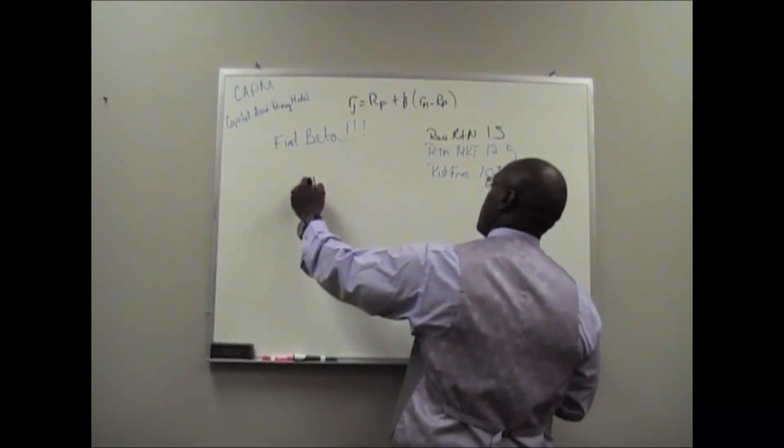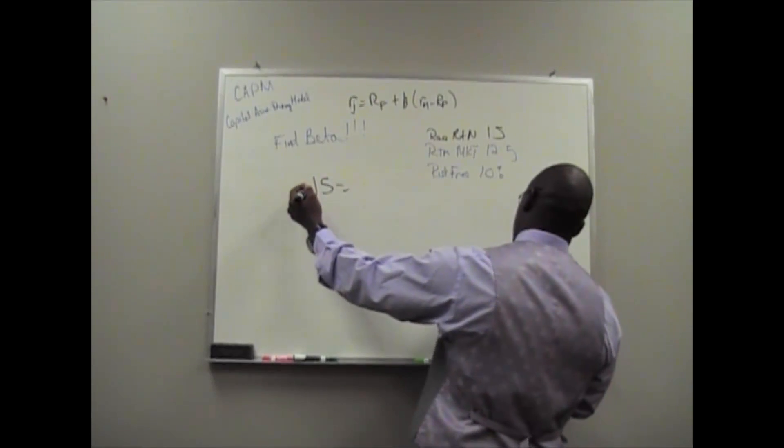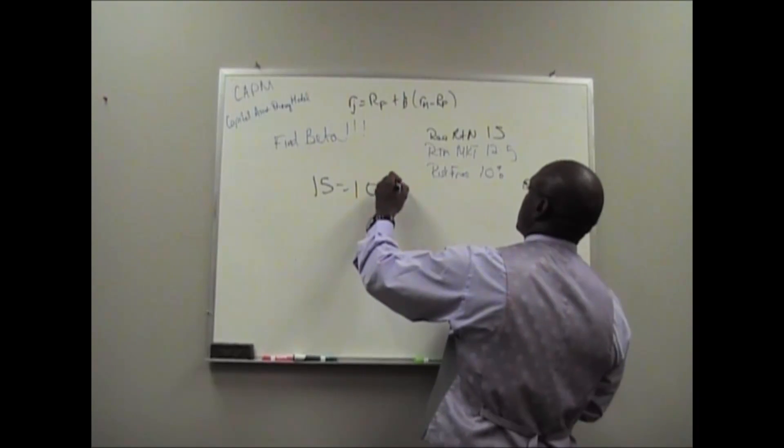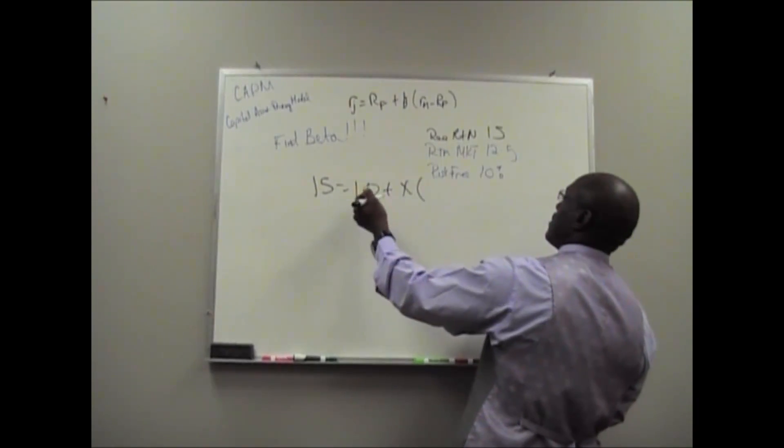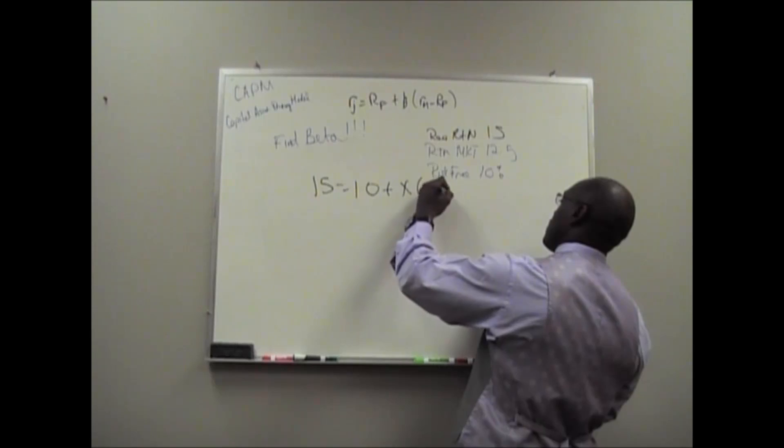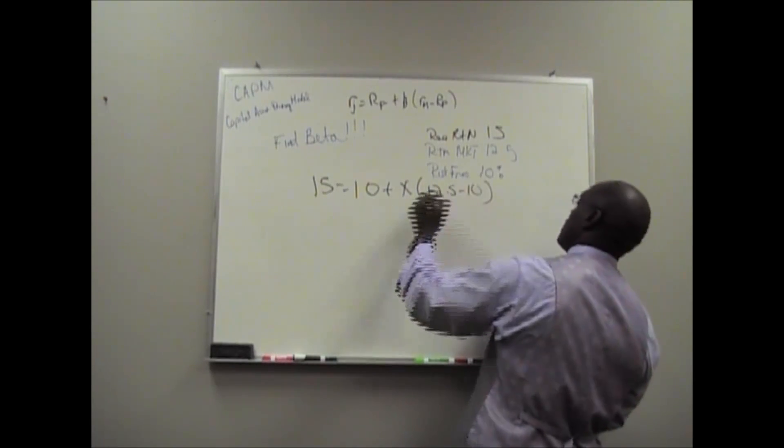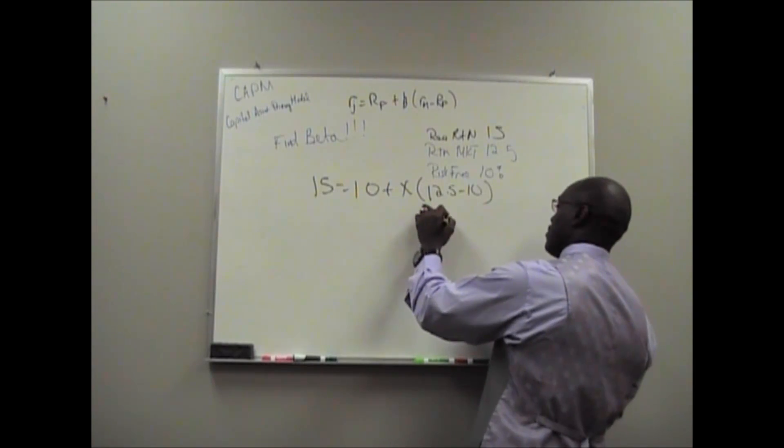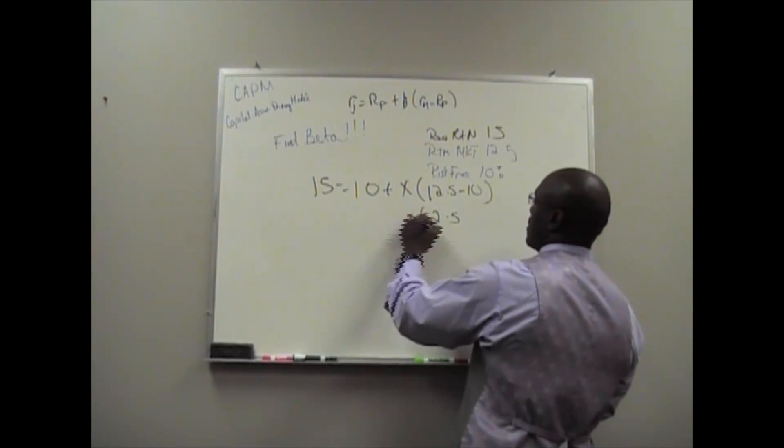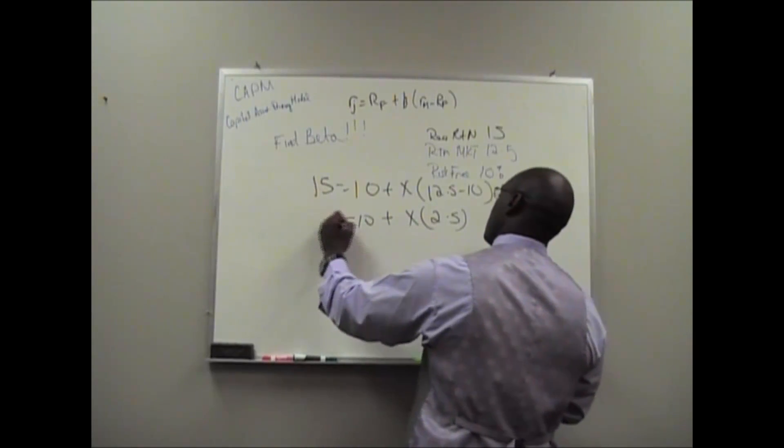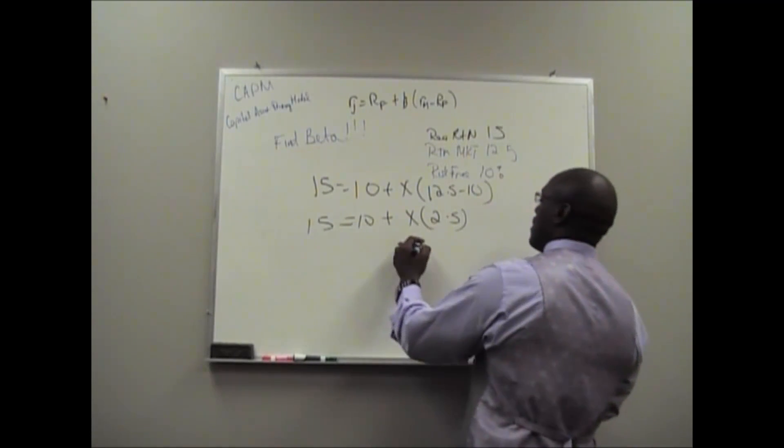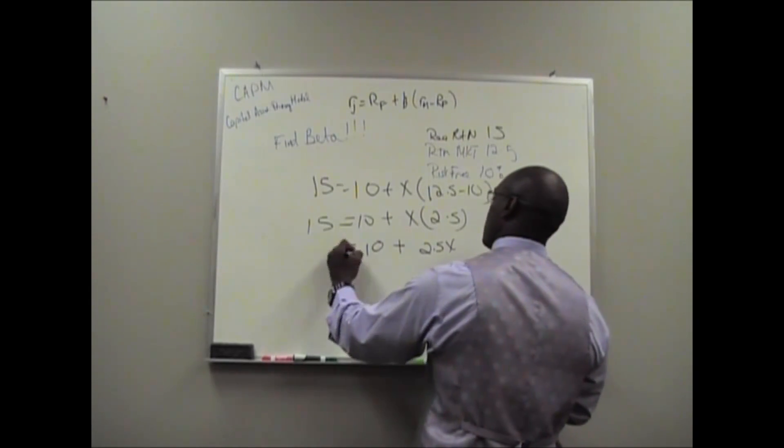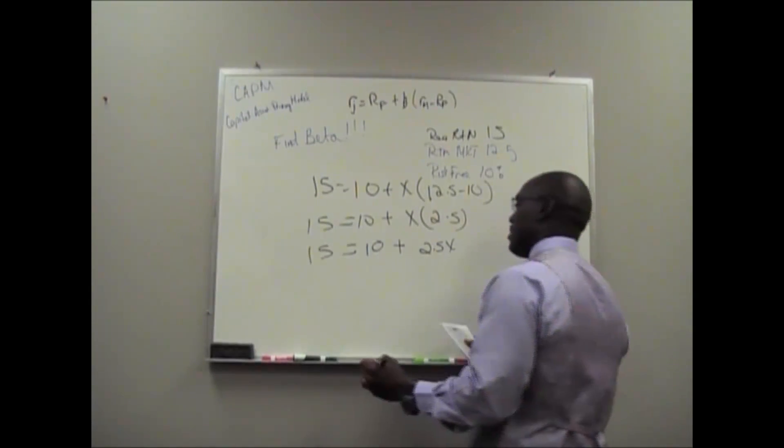We'll plug these into our formula. 15 equals 10 plus, we're going to put X as the variable, 12.5 minus 10. Perform the calculations inside the parentheses, 2.5. That would be 2.5X.